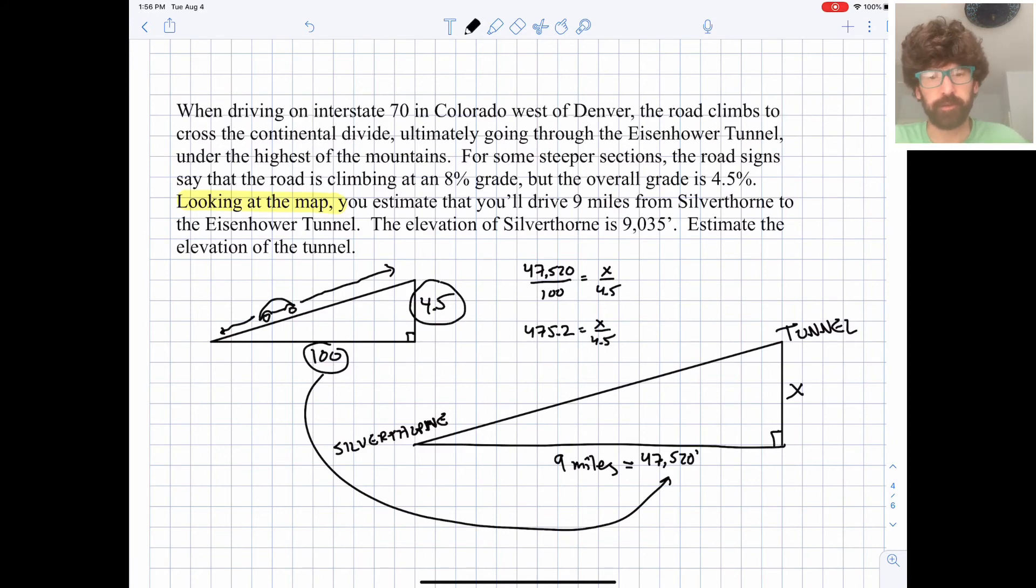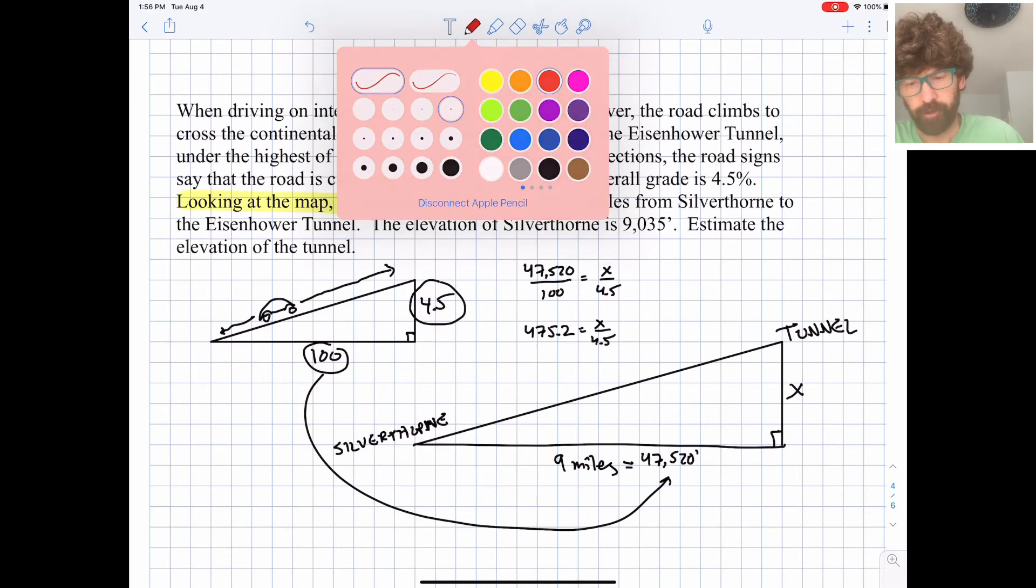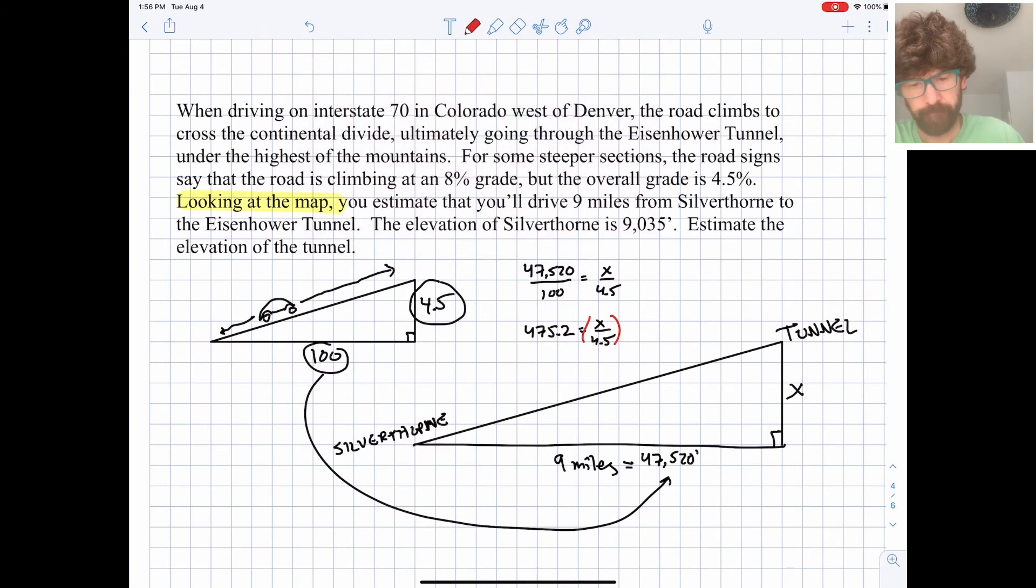So that's going to be 475.2 equals X over 4.5. And then we just multiply both sides by 4.5, keeping our equation balanced. And we will end up with 2138.4. So that's a big hill you're climbing. You're going up over 2,000 feet in the space of just nine miles. So it's certainly a significant climb that you're doing.